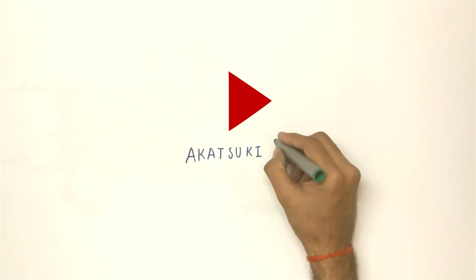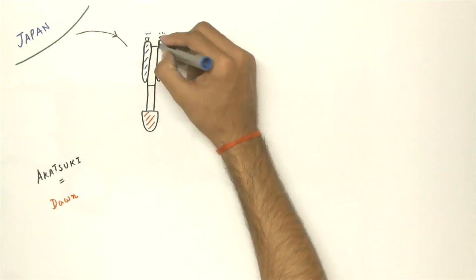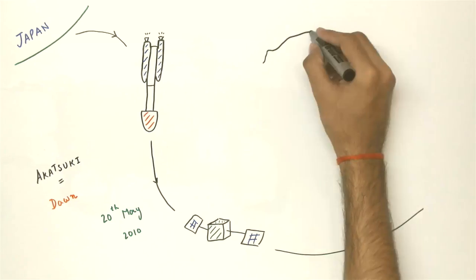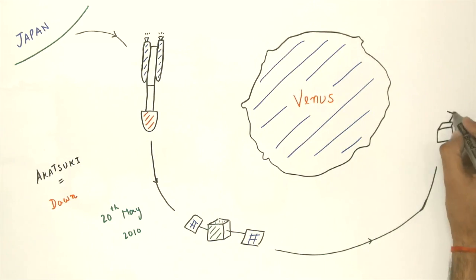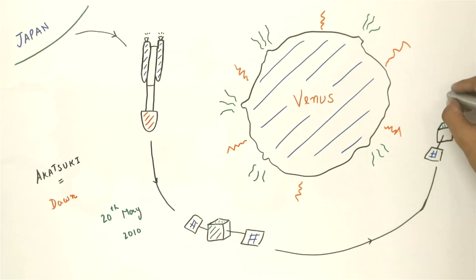JAXA's Akatsuki Reloaded. Meaning Dawn in Japanese, the Akatsuki craft was launched aboard an H-2A rocket on 20th May 2010. It was supposed to explore the planet Venus. Planned objectives included cloud and surface imaging and to confirm the presence of lightning and to determine whether volcanism currently occurs on Venus. But the mission failed to insert the craft into Venus' orbit when the main engine backfired on 7th December 2010.